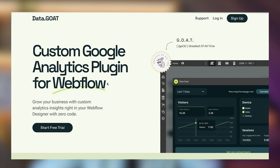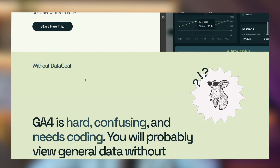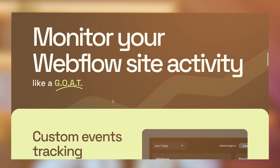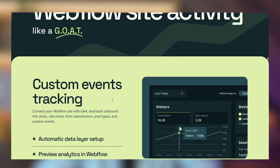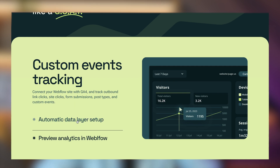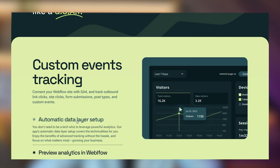Data Goat is a custom analytics Webflow plugin. Before Data Goat, you'd need to learn GA4, create custom conversions, and end up with data that's generally pretty lacking. With Data Goat, you're going to be able to add custom event tracking — we're adding a data layer on top of your website automatically.